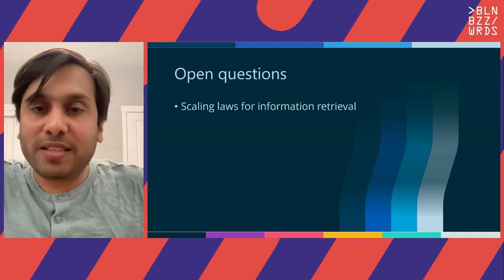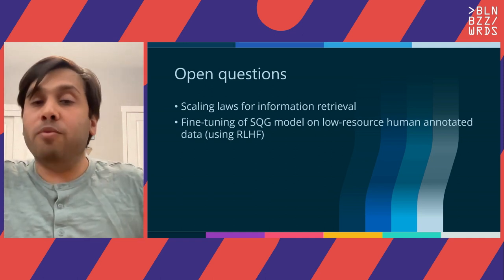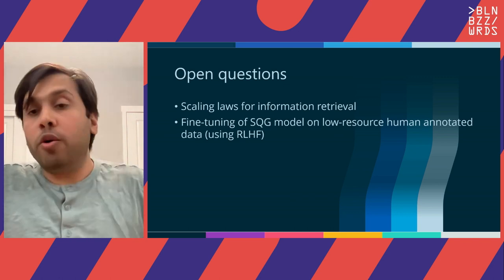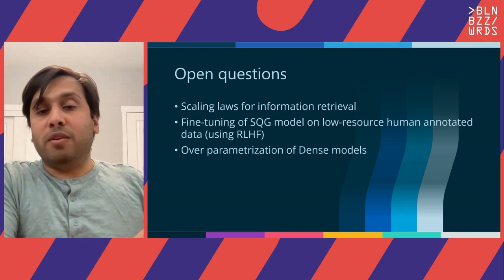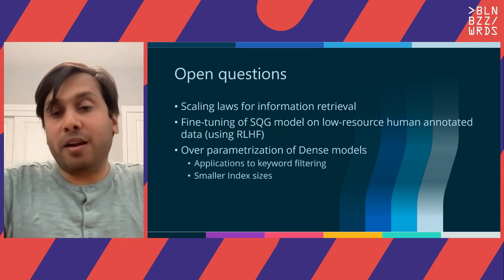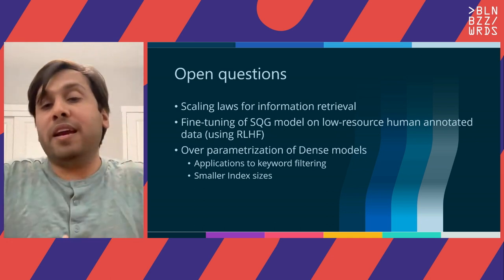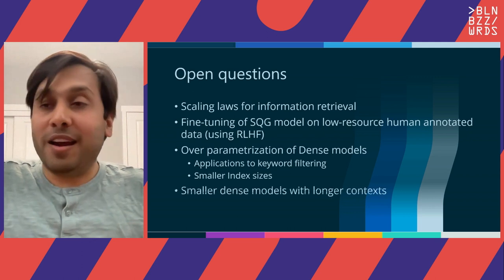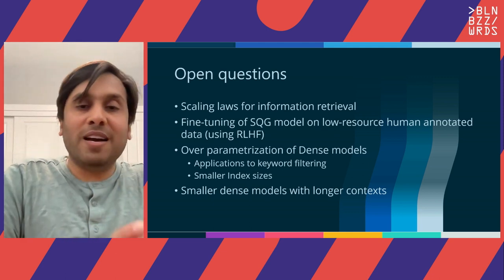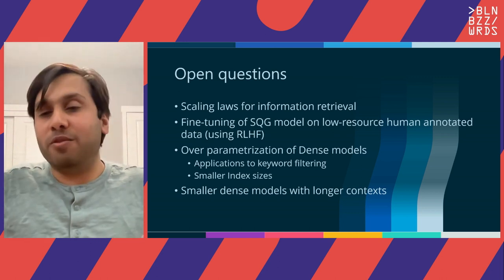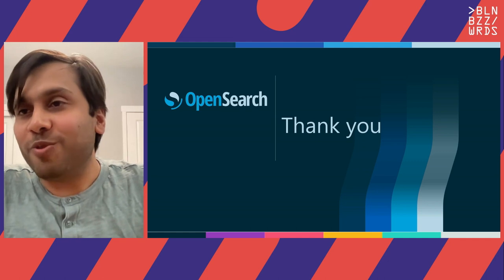Some open questions that we as a community need to answer: first, scaling laws for information retrieval — can we figure out how performance changes with more data and more compute? Second, can we train models on low-resource human-annotated data using recent techniques like RLHF? Finally, all of these dense models are very over-parameterized — can we decrease the index sizes such that we can use dense models for keyword filtering? This is an area of active research we're pursuing. And finally, we really need small dense models and smaller cross-encoders in the 100 million parameter range that can still read more than 512 tokens. With that, I'd like to end my talk. Thank you for your attention.